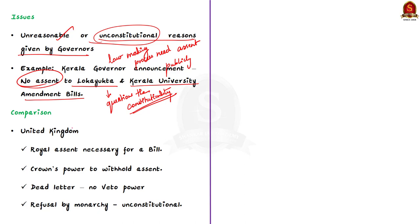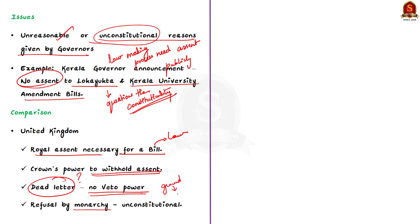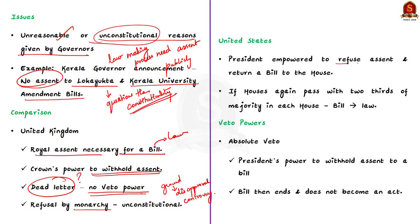In the United Kingdom, royal assent is necessary for a bill to become a law, and the crown has the power to withhold assent, but it is a dead letter — by practice and usage, there is no power of veto exercised by the crown in England. Refusal of royal assent on grounds that the monarchy strongly disapproves the bill or that the bill is very controversial is treated as unconstitutional. In the United States, the president is empowered to refuse assent and return a bill, but if the house passes it again with a two-thirds majority in each house, the bill becomes law.